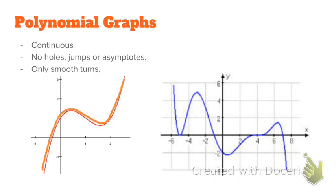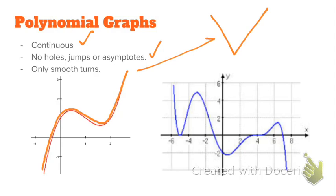There's no holes, jumps, or asymptotes — those are all discontinuities. That makes sense, because if they had discontinuities, that would contradict the fact that it's continuous. And the turns are only smooth, so that means nothing like absolute value. You're not going to see that.